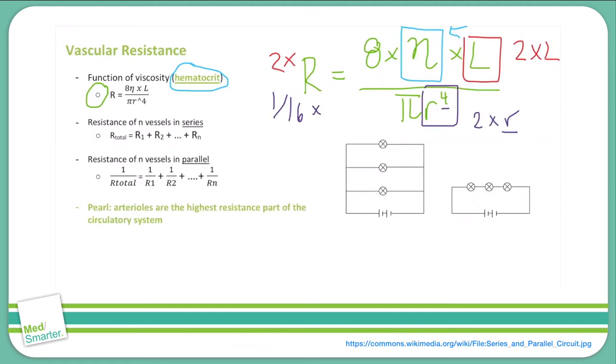So now that we know how to calculate resistance, let's consider another scenario. The body isn't just one blood vessel with one length and one radius, it's a bunch of different blood vessels and they all have different lengths and radii. So how do we account for that? Well, let's look at whether those vessels are in series or in parallel.